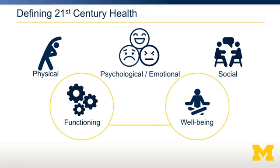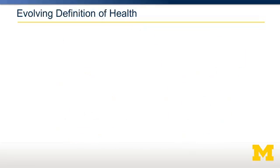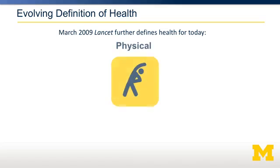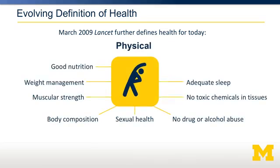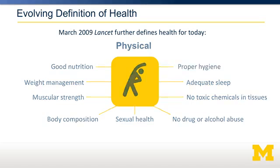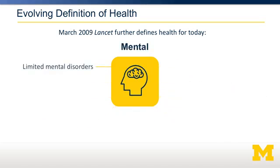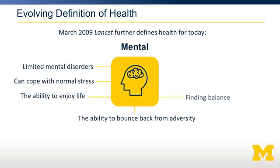This approach addresses the evolving definition of health from the World Health Organization that allows us to expand our thinking to include not just the absence of illness and physical health, but also good nutrition, muscular strength, and adequate sleep. Mental health issues such as coping with stress, being flexible, finding balance, and the ability to enjoy life are also included in a definition of good health.